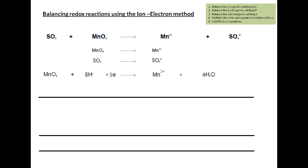For the second half-reaction, SO2 is becoming SO4²⁻. The first step again is to balance the oxygen by adding water. We have two oxygens on the left and four on the right, so we add two H2O to the left-hand side. By adding two H2O we are adding four hydrogens on the left, so we add 4H⁺ to the right-hand side. Now the hydrogens and oxygens are balanced.